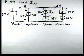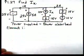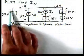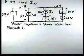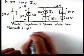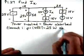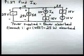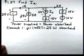Let's start calculating the powers. For element one on the left of the circuit, we've got a current of one amp entering the plus and leaving the minus, so the voltage and current satisfy the passive sign convention. The power for this element is 25 times one, which is 25 watts absorbed.